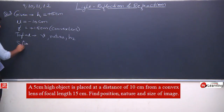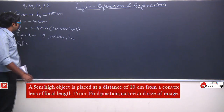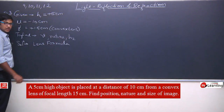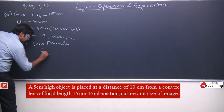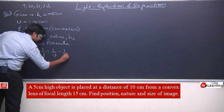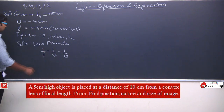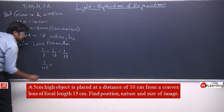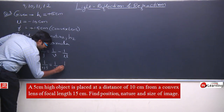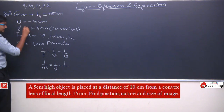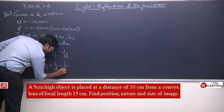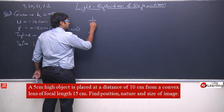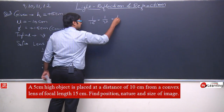Solution mein yahan pe kaun sa formula apply hoga? Yes, one and only lens formula. Lens formula kehta hai ki 1 upon f is equals to 1 upon v minus 1 upon u. Now substituting the values: 1 upon plus 15 will be equals to 1 upon v minus 1 upon minus 10, so this is minus 10.